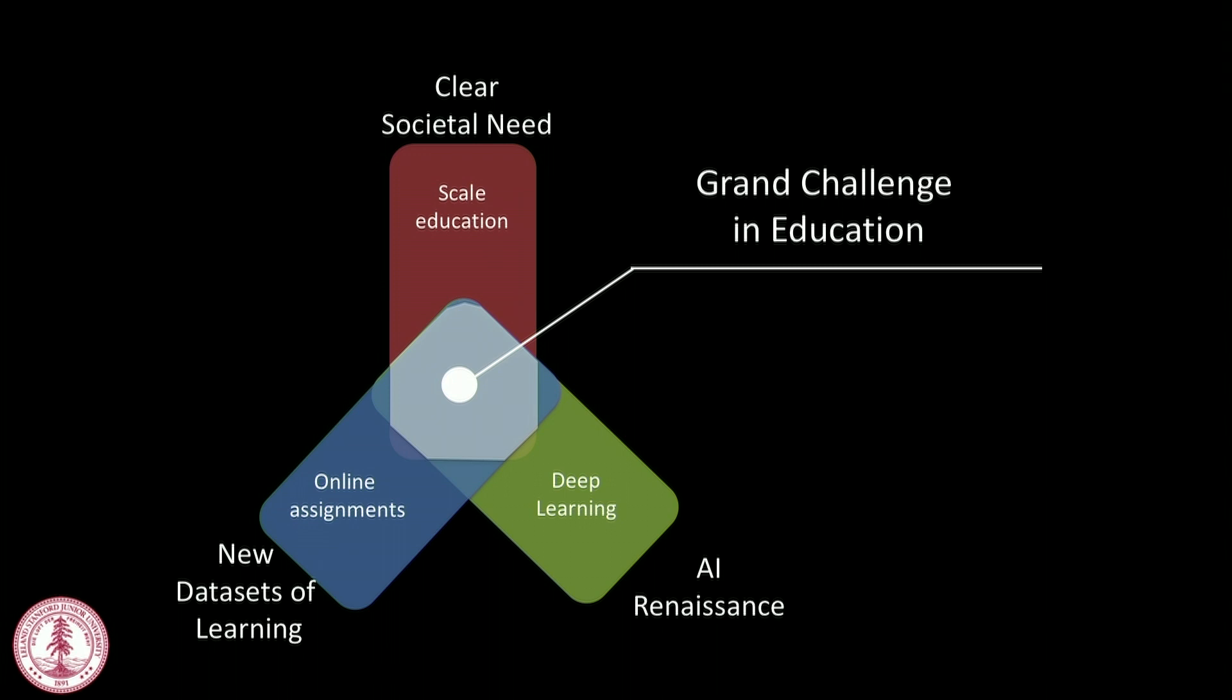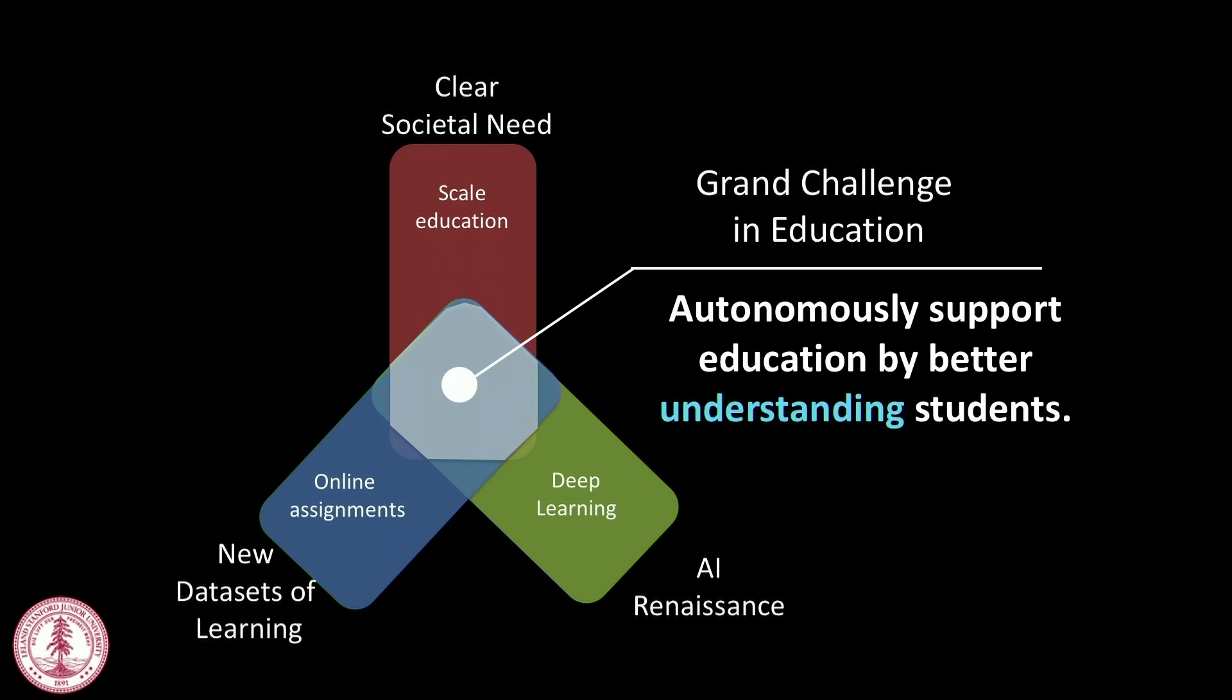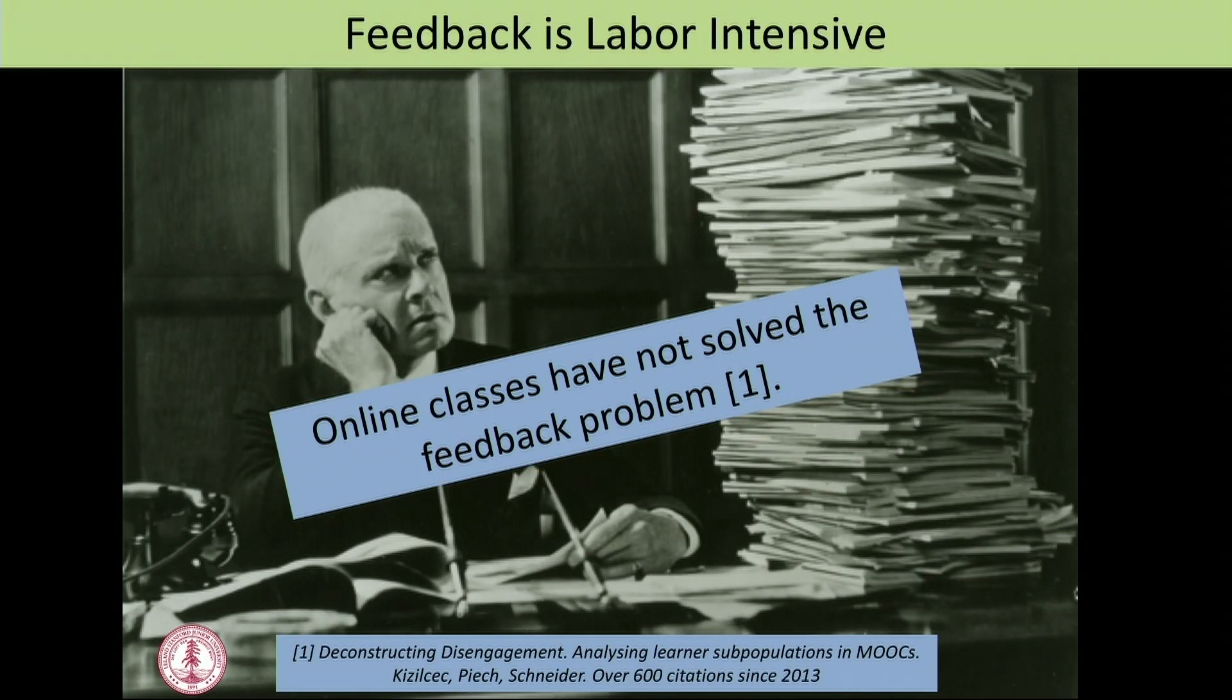There is this beautiful confluence of things happening in 2019. There's the clear societal need to scale high-quality education. There is this Renaissance happening in artificial intelligence. At the same time, millions of people are going online to learn. In the intersection of all these three things is how can we autonomously support education. For my mind, that really comes from understanding students—we can finally understand our learners to the point that we can help them.